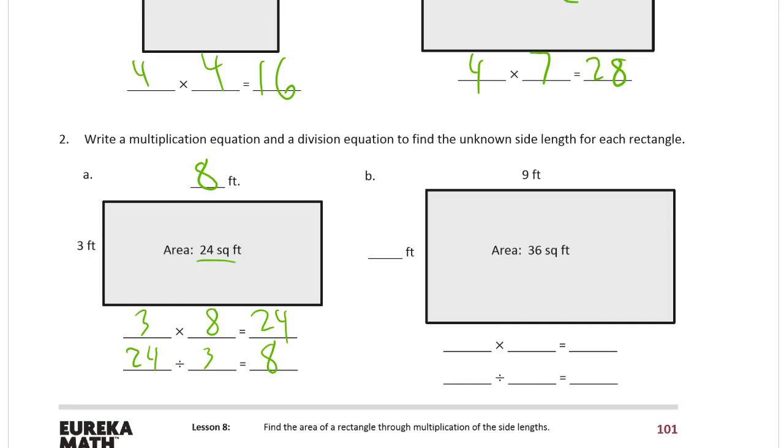And same thing here for B. We have, for multiplication, 9 times something equals 36. Or for division, which this really is, 36 divided by 9, it takes 4 nines to make 36.